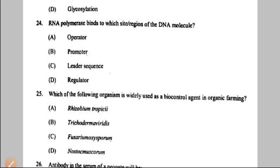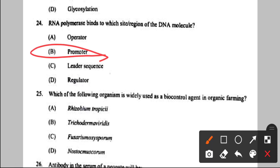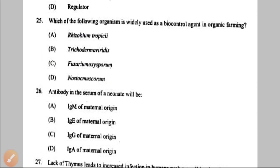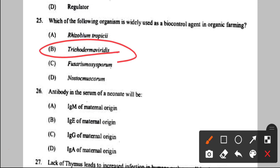Question number 24: RNA polymerase binds to which site on the DNA molecule for transcription? It binds to the promoter region — option B. Question number 25: which organism is widely used as a bio control agent in organic farming? The answer is Trichoderma viridis — option B. This fungus is used as a bio-fungicide in organic farming.